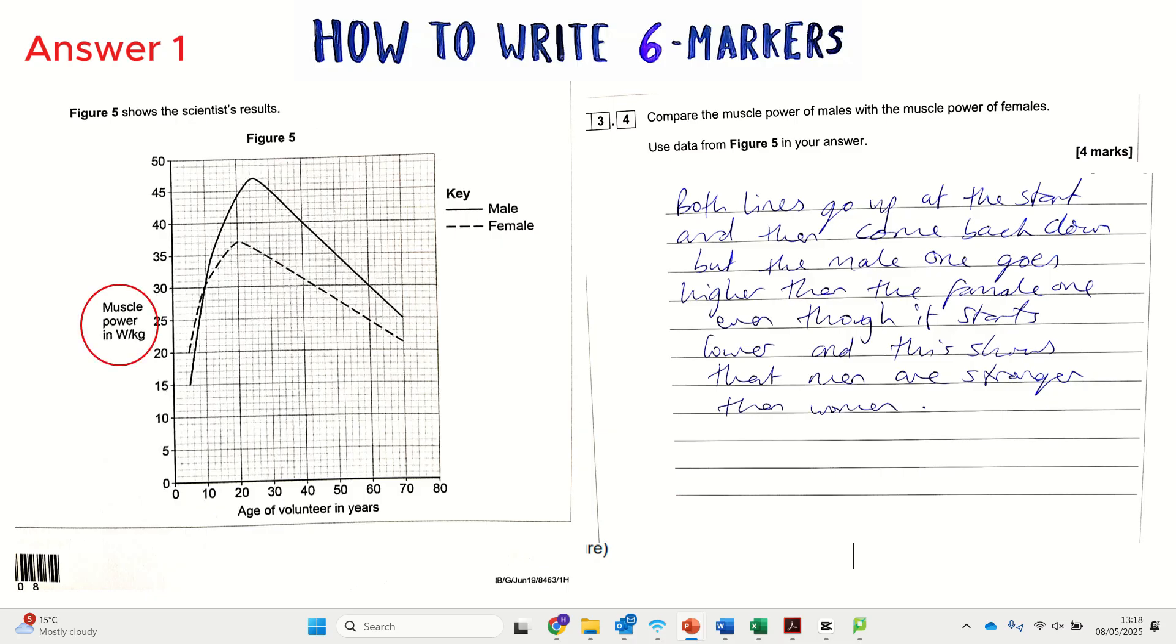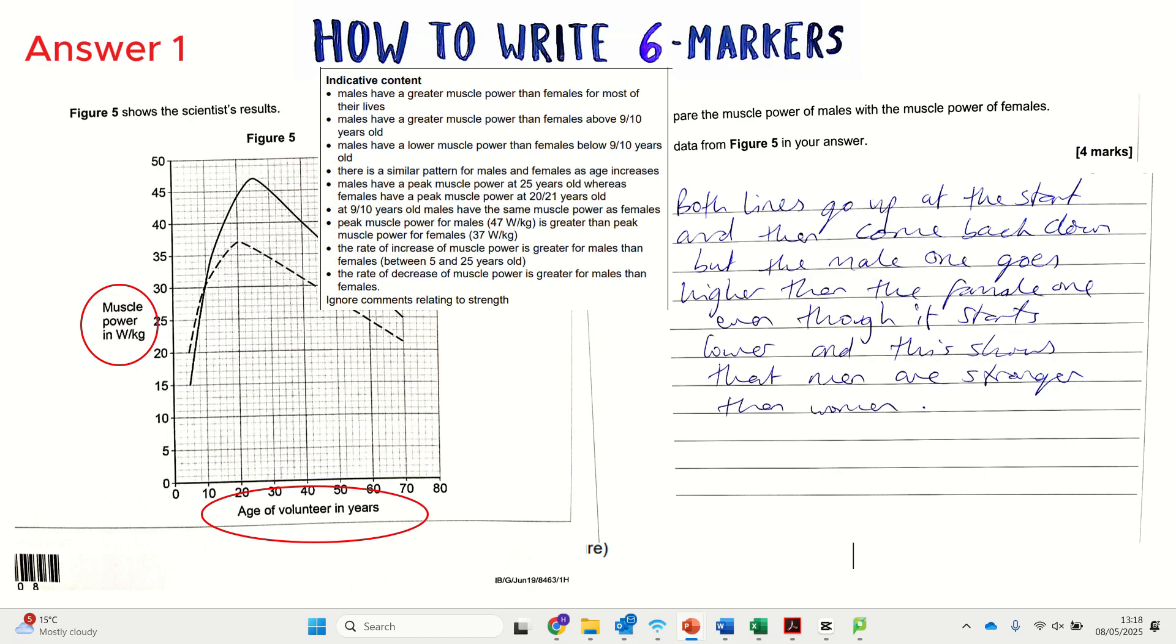I'm going to show you a couple of reasons why it's bad and some pointers to look out for. The first answer says both lines go up at the start and come back down, and the one goes higher than the female one even though it starts lower, and it shows that men are stronger than women. First of all, they haven't used bullet points. Second, they haven't mentioned muscle power once. If the question asks for muscle power, you have to mention that because that's what the graph is comparing. The mark scheme specifically says ignore comments related to strength. It just talks about muscle power.